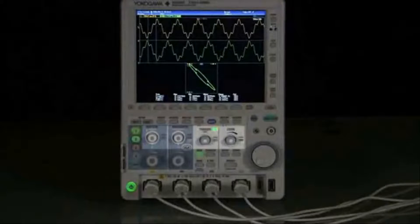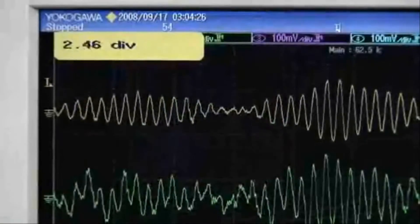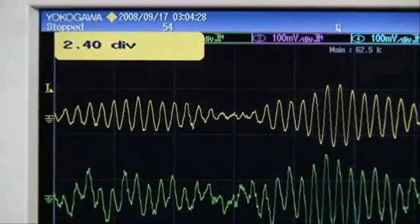The DLM2000 is designed with you in mind. Dedicated knobs for vertical position, horizontal position, trigger level, and zoom mean you can quickly and easily adjust the most common settings.